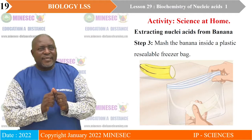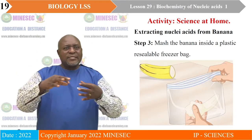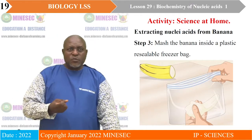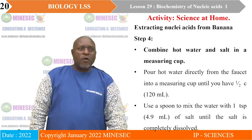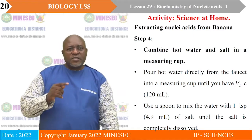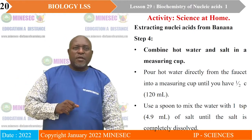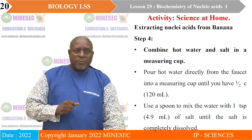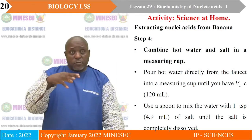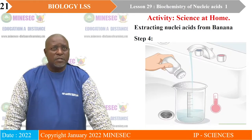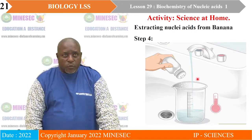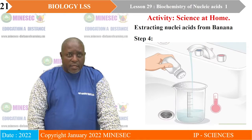Step four: combine hot water and salt in a measuring cup. Put hot water from the faucet into the measuring cup until you have about 120 ml. Use a spoon to mix the water with one teaspoon of salt until the salt is completely dissolved. In the picture, you see hot water is put in and salt is added and mixed until completely dissolved.